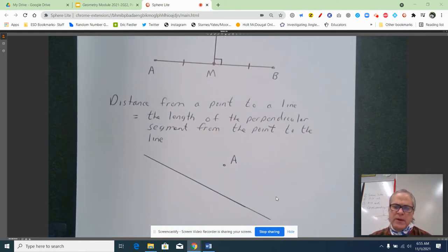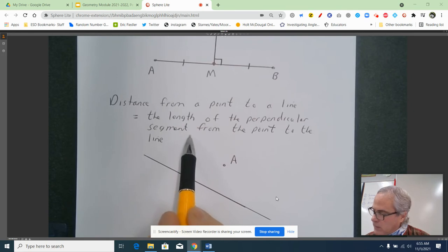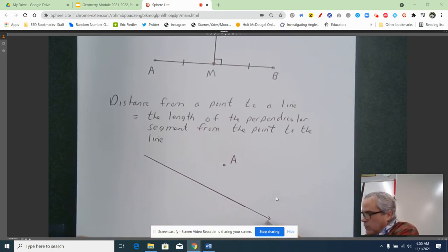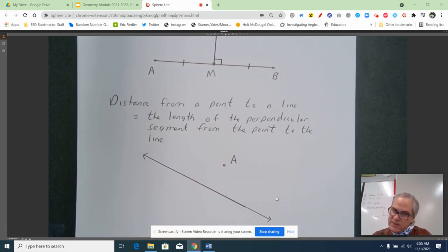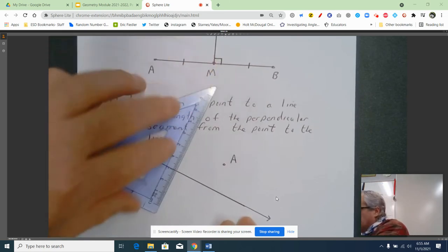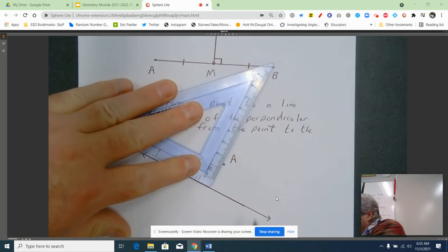Next one: distance from a point to a line. This is strongly related to perpendicular bisector, although it doesn't say it. It says it's the length of the perpendicular segment from the point to the line. So pretend this line goes on and on. We're not going to be able to bisect it in half because it goes in all directions, but this is kind of close to that perpendicular bisector definition because we're going to draw a perpendicular from point A to that line.